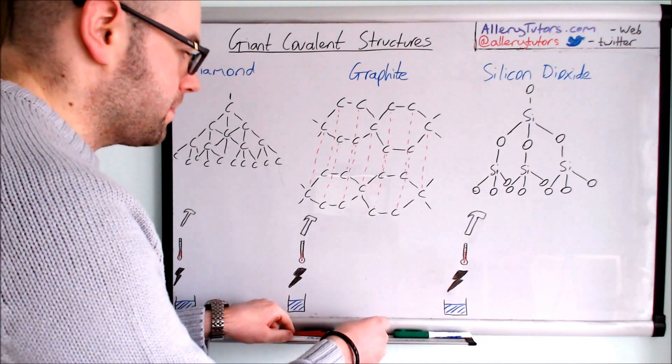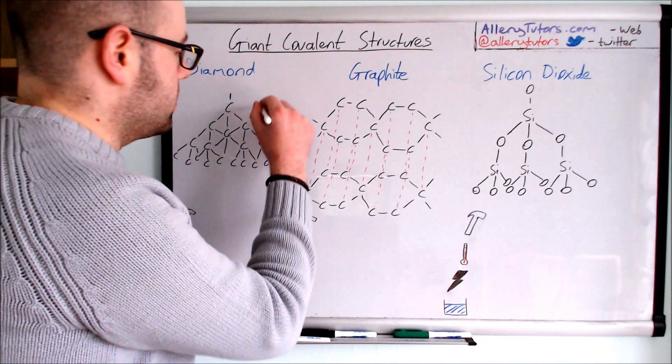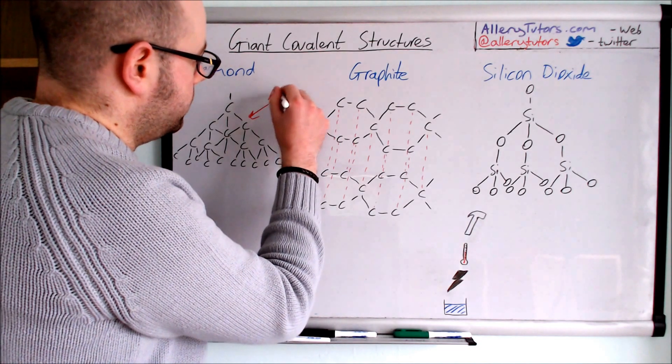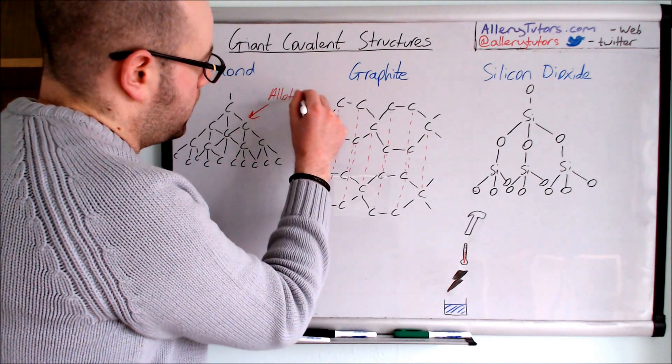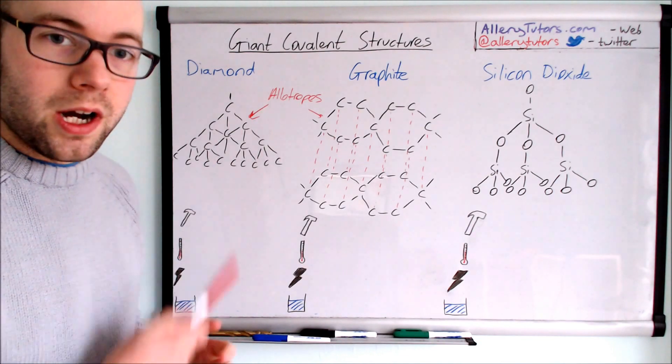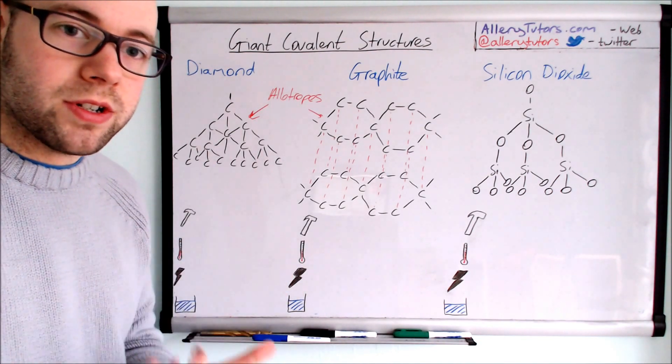Allotropes are basically where we have the same element, in this case carbon, but they're arranged differently so the structure of them is different.